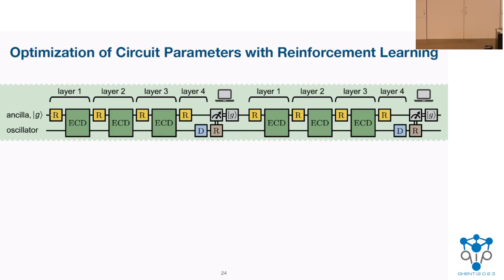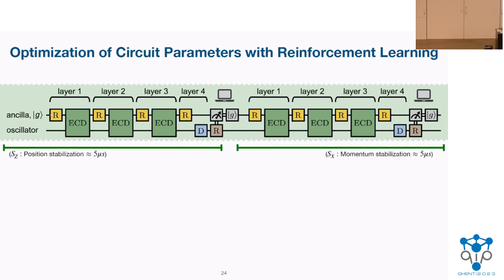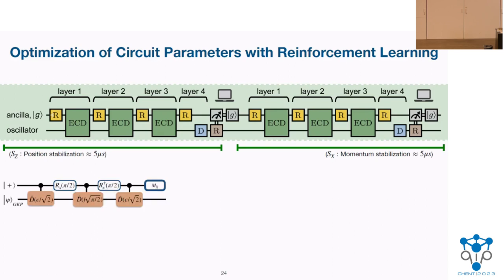Here's the experimental circuit we used. The first chunk is the SZ stabilization — the circuit I just showed you. The second chunk is SX stabilization — the same circuit, but the middle conditional displacement has an imaginary argument I, while the other two do not: D(root-pi/2) in the middle and D(i·epsilon) on either side. Each of these SZ and SX cycles independently takes five microseconds, so the circuit is a bit slow compared to surface code cycles.